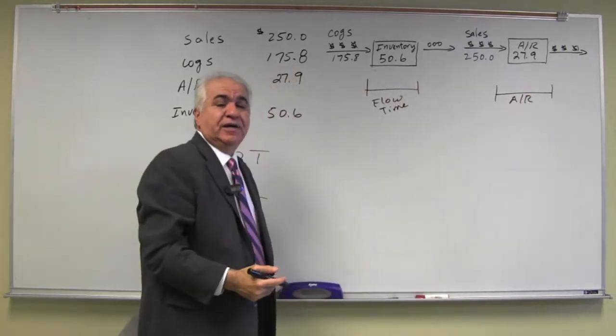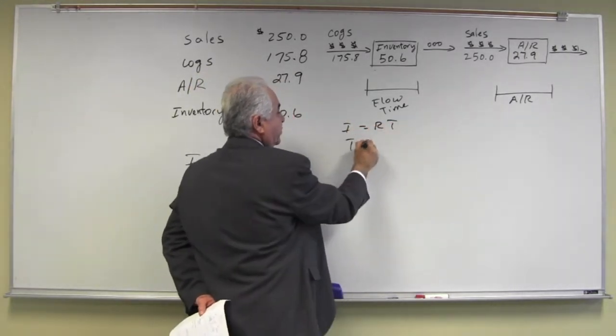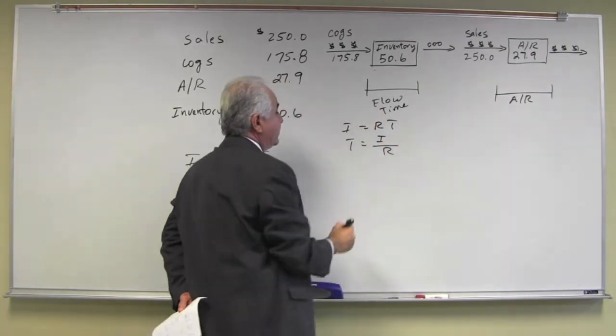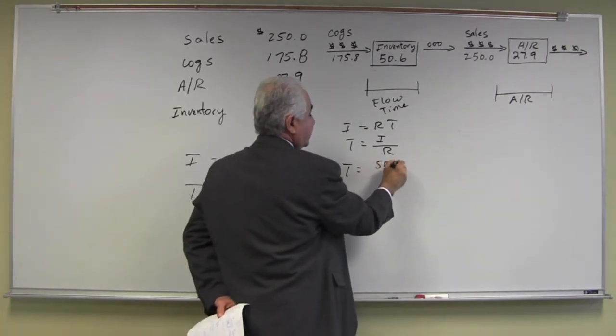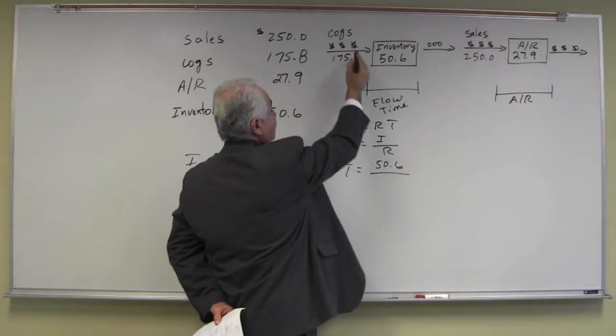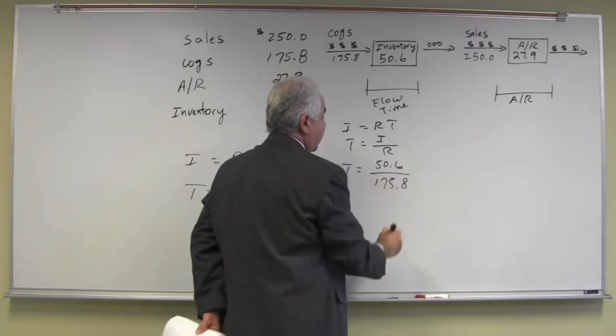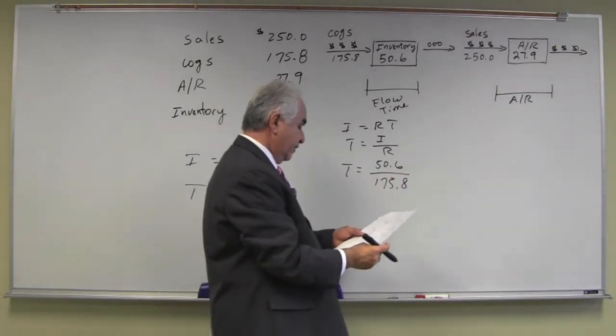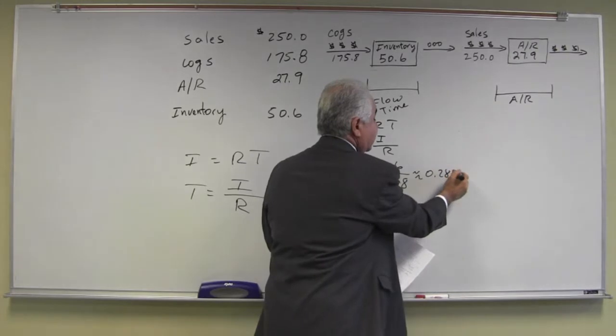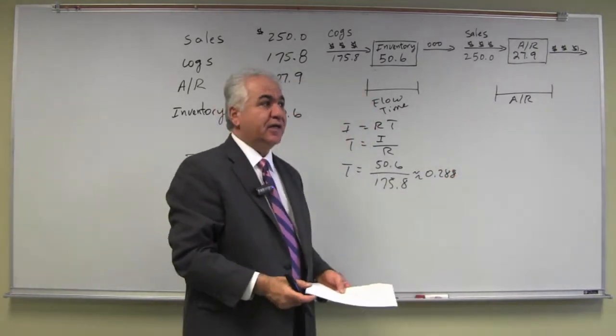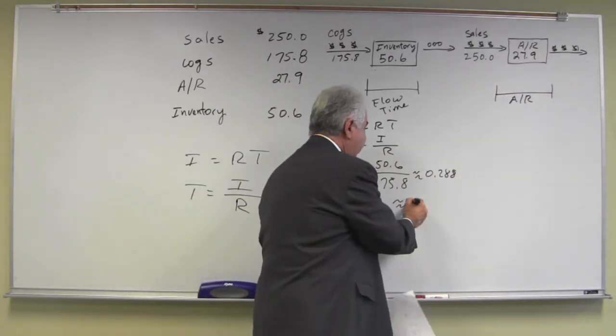If we relate this to Little's relationship as I equals RT, then T equals I over R. In this case, the flow time T is the average inventory, $50.6 million, divided by the throughput of the process is the cost of goods sold, which is $175.8 million, which gives you a value of approximately 0.288 years. Now you can easily convert that into days. And becomes approximately 105 days.